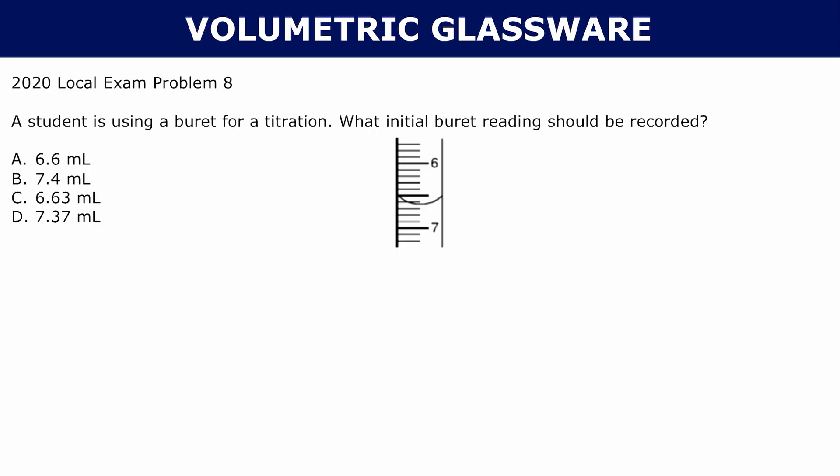Let's do one more practice problem with reading one of these meniscus. If a student is using a buret for a titration, what initial buret reading should be recorded? We'll look at burets later, but something about a buret is that the numbers are flipped. Usually it goes that the lower you go, the lower your numbers are. But in a buret, they're flipped. So the higher you go, the lower your numbers get.